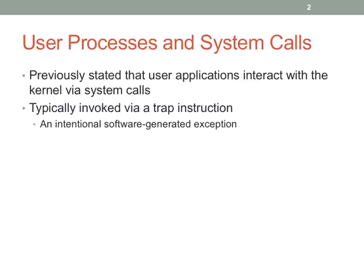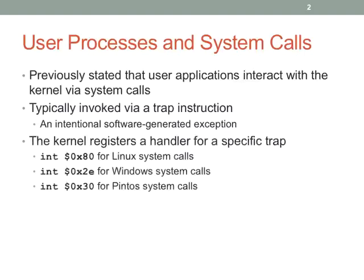We're going to talk about the trap instruction, because that's the general purpose way of doing it — though keep in mind there's a more specialized, streamlined way used by probably 99% of system calls. The kernel registers a handler for a specific trap — this is always going to be there to support the general mechanism. int 80 for Linux system calls (that's 128 decimal), 0x2e for Windows, and 0x30 for Pintos. So if you see an int 0x30 handler in Pintos, that's what it's for.